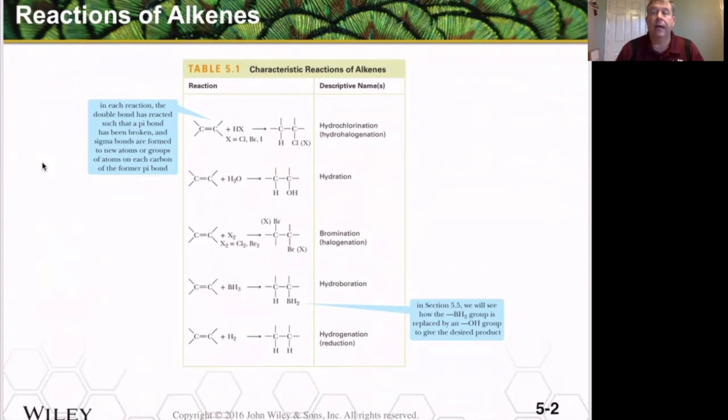We're going to add HCl or HBr across there in what we call a hydrohalogenation, where we have a hydrogen and a halogen we add across. We're also going to do what we call hydration or adding water across the double bond. We're going to add either a bromine or a chlorine across that double bond and that would be called a halogenation.